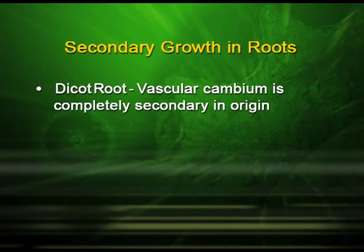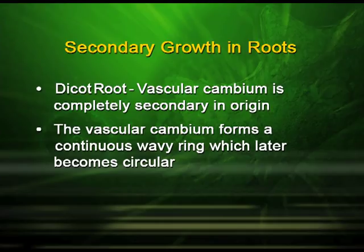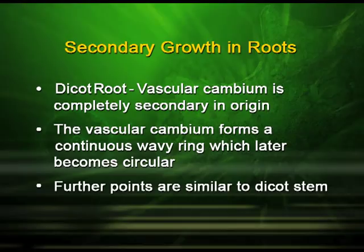Secondary growth is also found in roots. In the dicot root, the vascular cambium is completely secondary in origin, and the vascular cambium forms a continuous wavy ring which later becomes circular. The other characteristics of the dicot root are similar to the dicot stem.